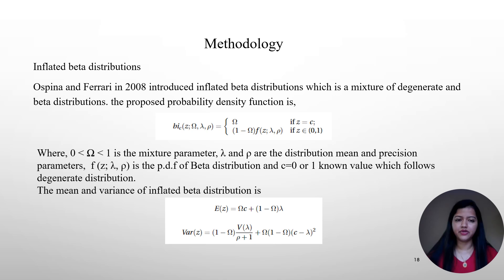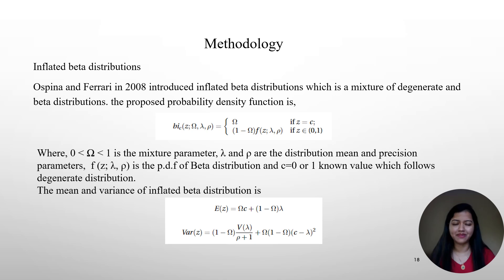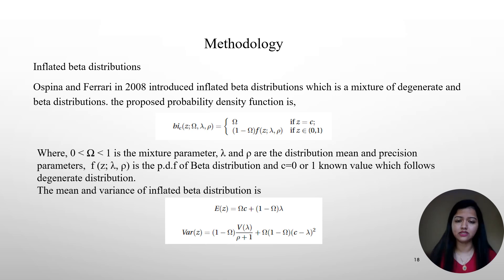We are using the inflated beta distribution, which is a mixture of degenerate and beta distribution. Here omega is the mixture parameter, and lambda and rho are the distribution mean and precision parameters. Z takes the value c, where c represents either 0 or 1. f(z) is the probability density function of the beta distribution. The mean of the inflated beta distribution is E(z) = ω·c + (1−ω)·λ, and the variance is λ/(ρ+1) + ω(1−ω)(c−λ)², where c can take value 0 or 1 depending on the data.